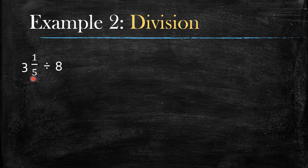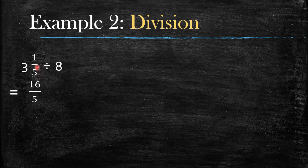Example number 2: what do you do when you have one mixed number and just one whole number — not a fraction, not a mixed number, but just one number? First, change the mixed number into an improper fraction by saying 3 times 5 plus 1 equals 16 over 5. It is over 5 because it was already over 5 and the denominator does not change.